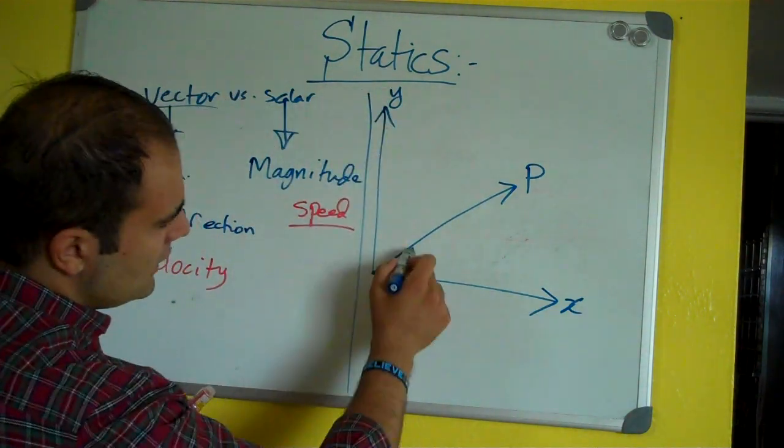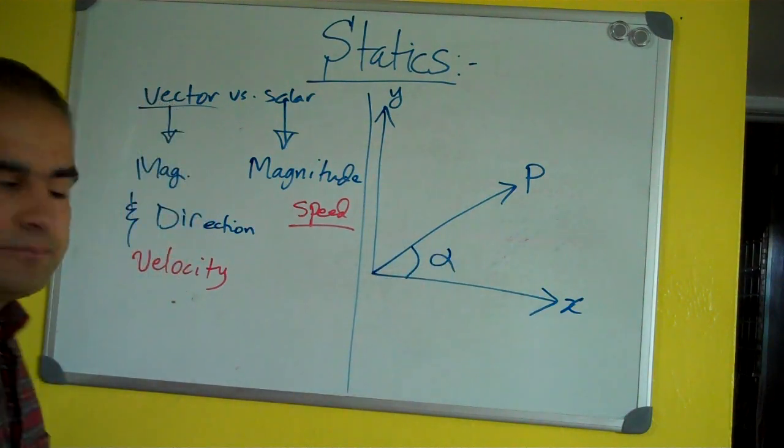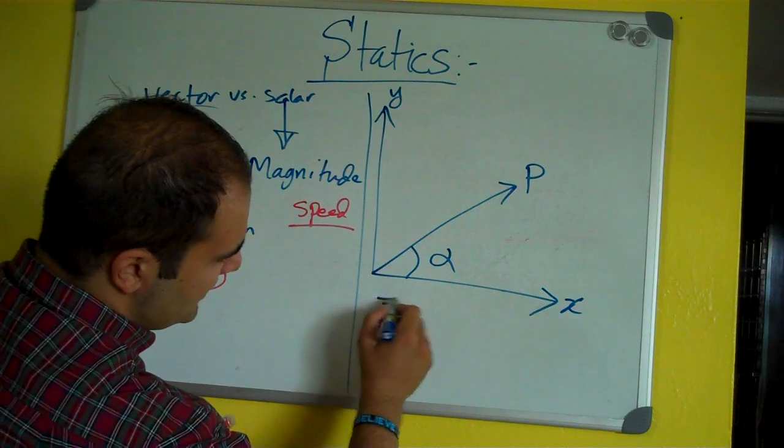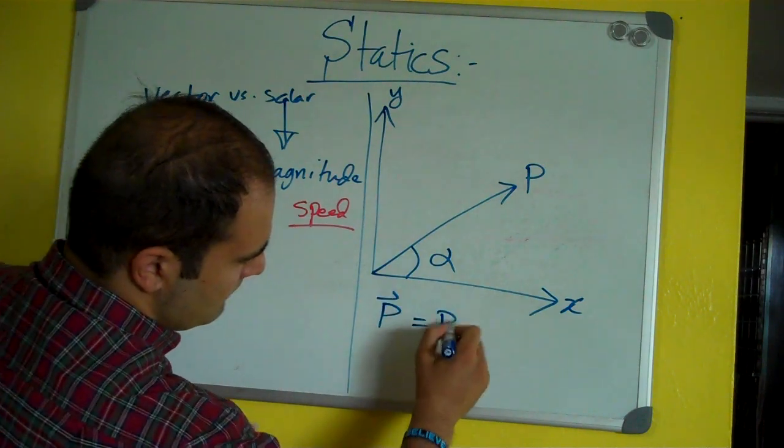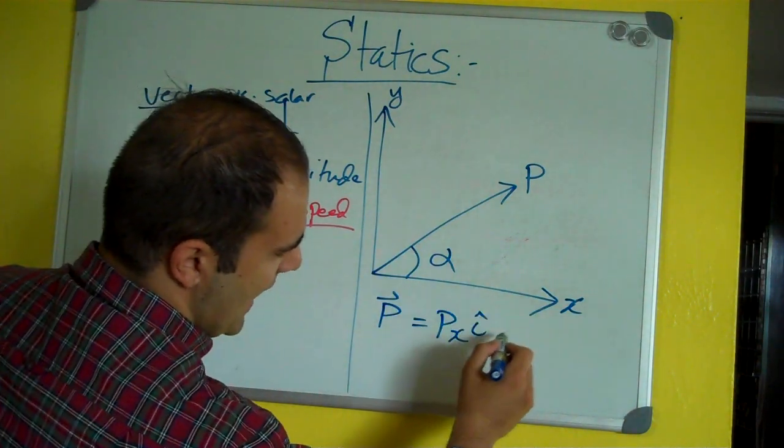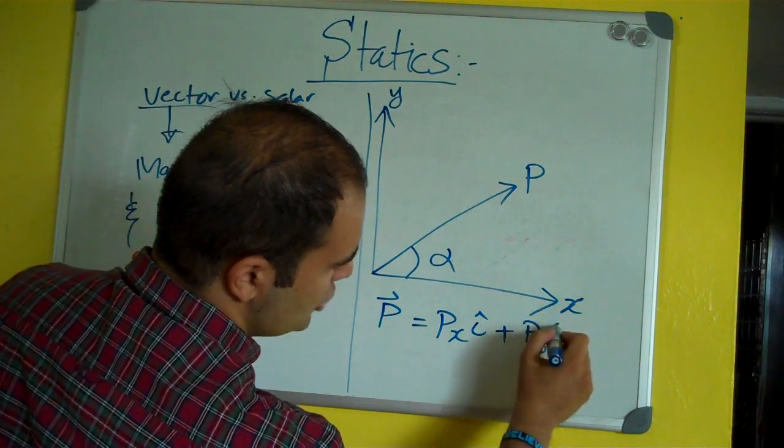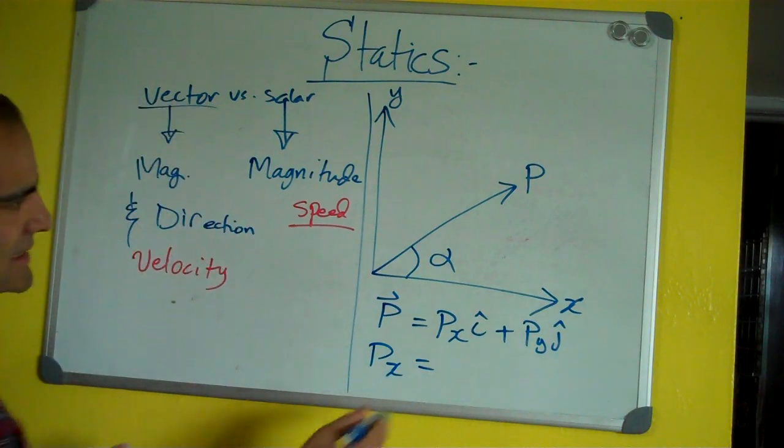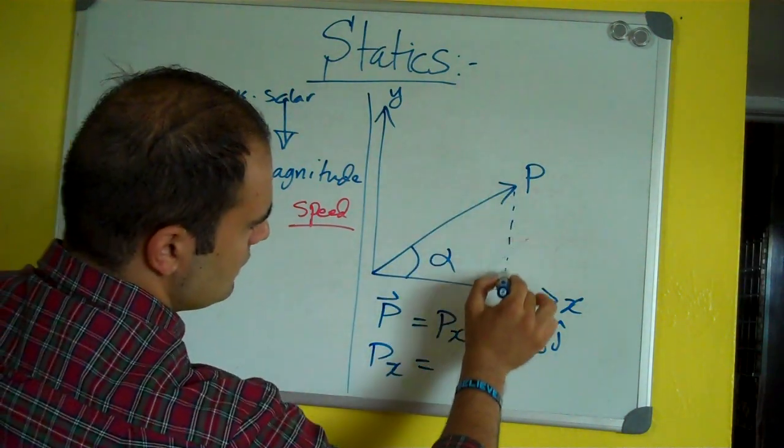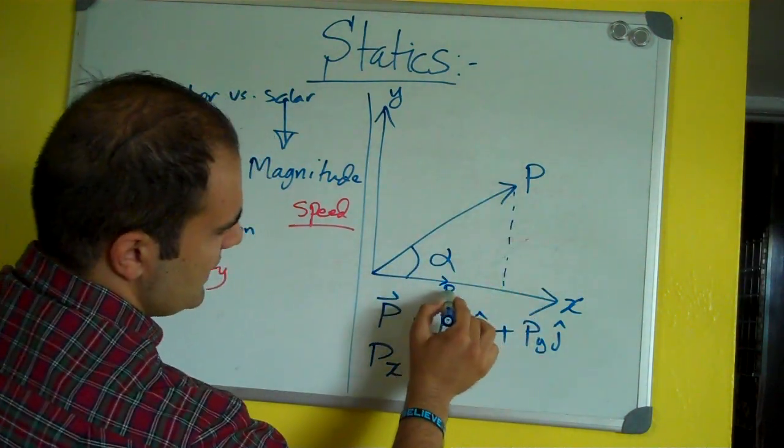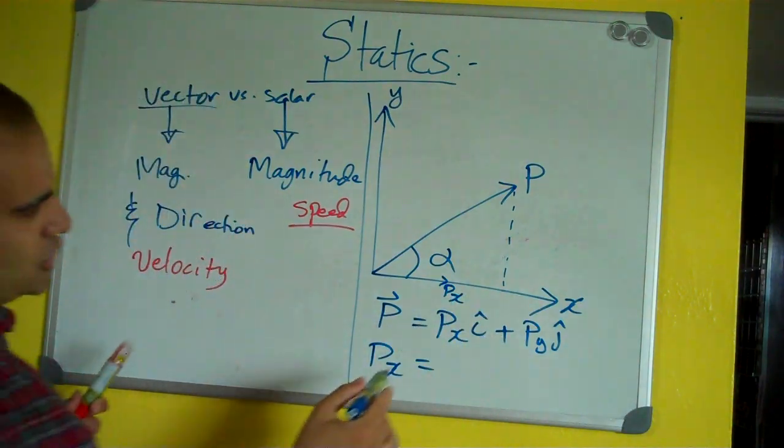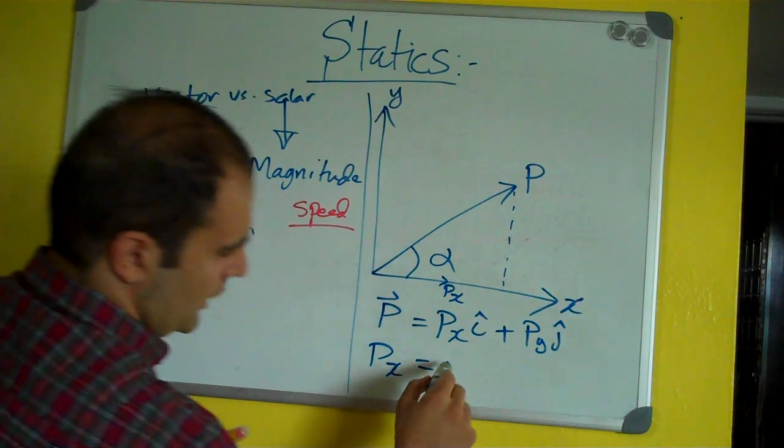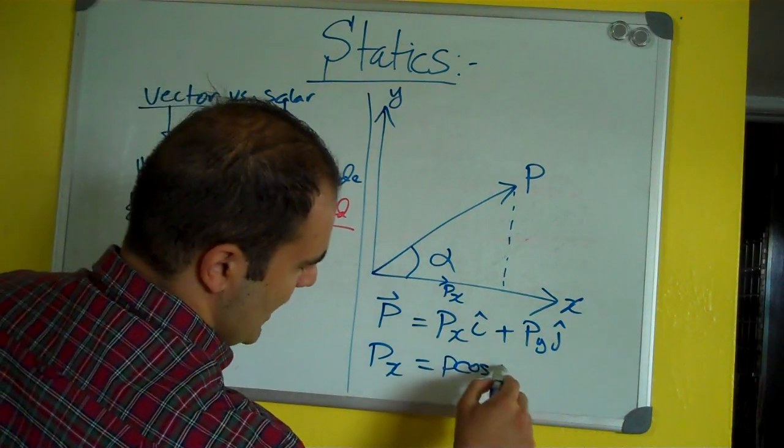So, if you have this system again, and you have this alpha, theta, beta, whatever. You could write p as a vector, px i hat, py j hat. And, px could be written as, here's your px. The relationship between theta and p and px is cosine. So, p cosine alpha.